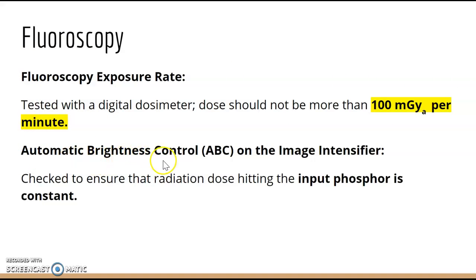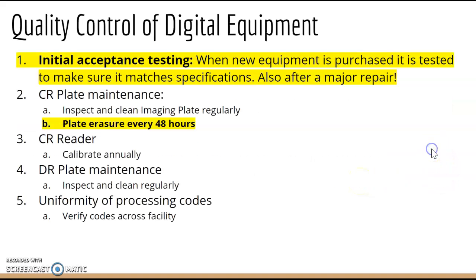The 100 milligray per minute fluoro limit appears on board review frequently — make a flashcard. Automatic Brightness Control, or ABC, is on the image intensifier, and testing ensures the radiation dose hitting the input phosphor remains constant.